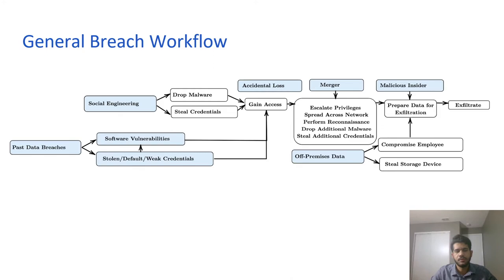This slide shows the general data breach workflow developed after studying the 10 famous incidents and the 50 data breaches from 2015. The blue rectangles show the initial attack vectors used by attackers, which include social engineering techniques, exploiting software vulnerabilities, exploiting stolen credentials, and using malicious insiders. After gaining initial access, attackers used various techniques such as escalating privileges, spreading across the network, and installing additional malware, eventually exfiltrating the data.